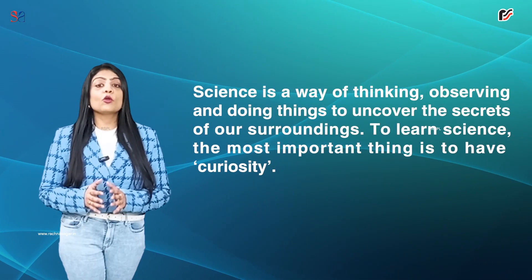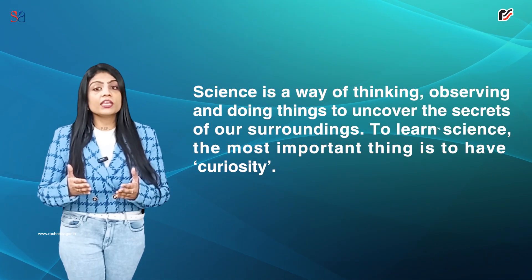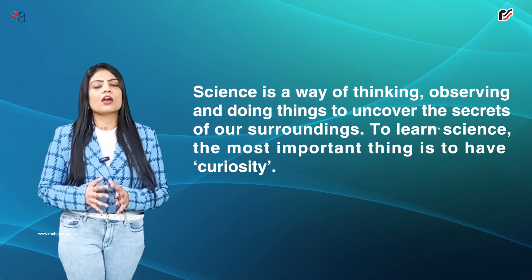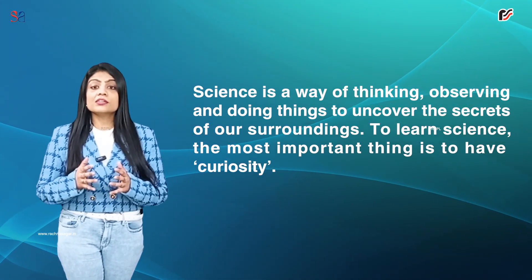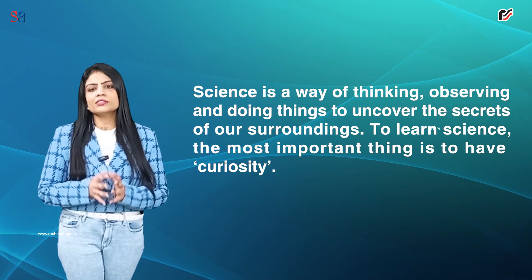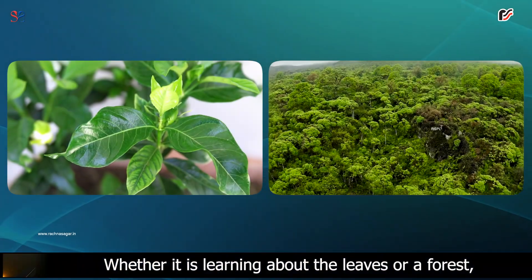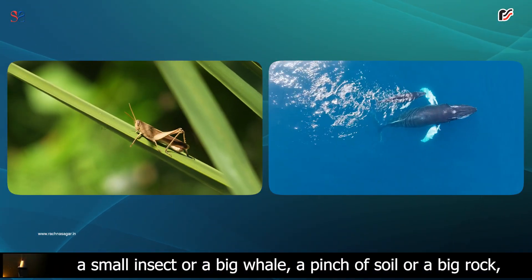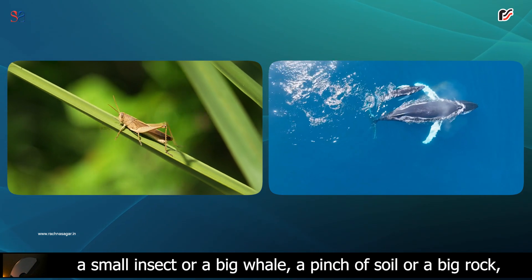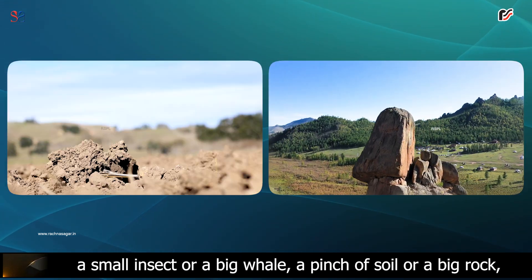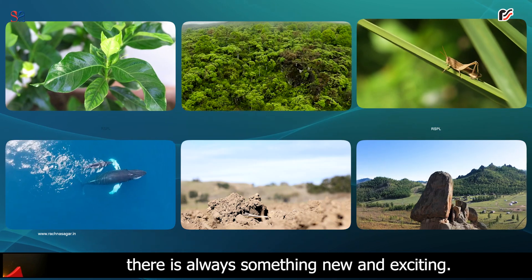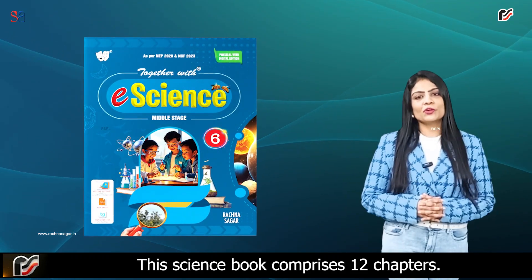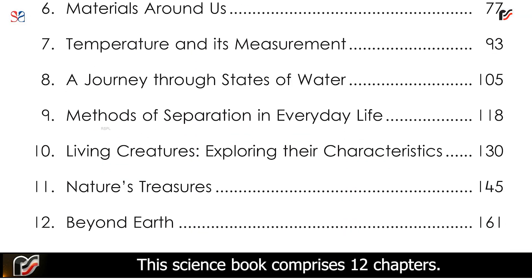Science is a way of thinking, observing and doing things to uncover the secrets of our surroundings. To learn science, the most important thing is to have curiosity. Whether it is learning about the leaves or a forest, a small insect or a big whale, a pinch of soil or a big rock, there is always something new and exciting. This science book comprises 12 chapters.